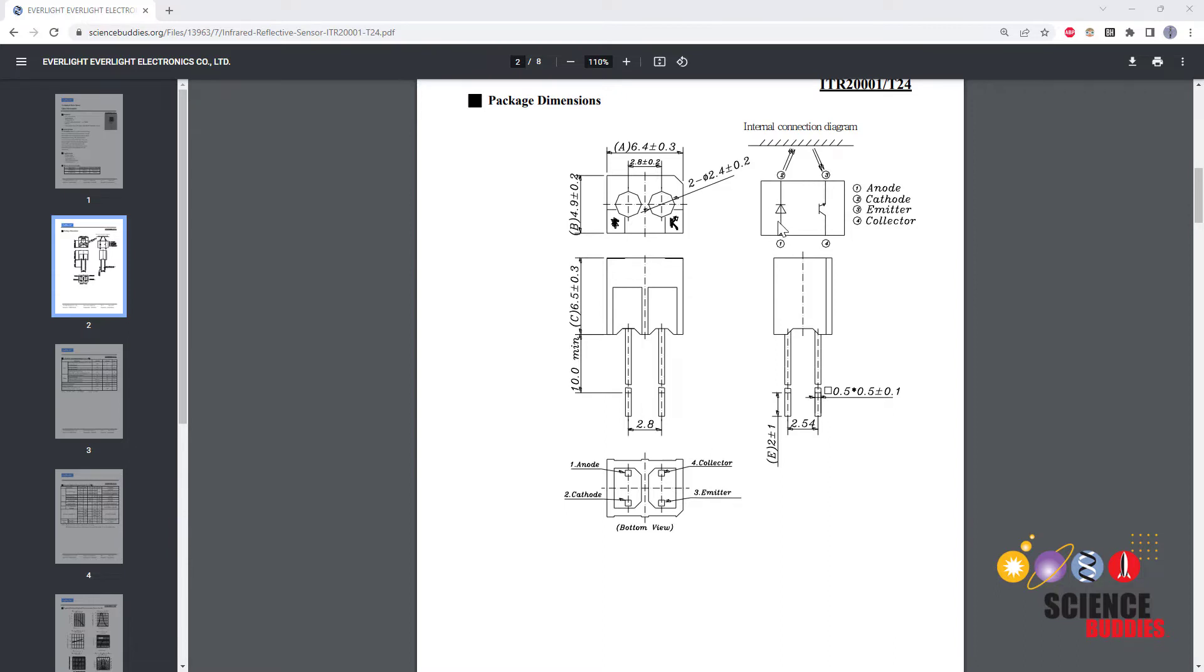So again the sensor has two parts. On one side we have the LED that has a pin called the anode which is the positive side and the cathode which is the negative side and again that is going to send out infrared light. And then on the other side we have that phototransistor which has pins called the emitter and collector and this is going to measure that reflected light.